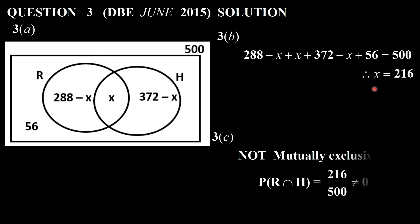Now we can ask a question. They ask you is it mutually exclusive? And obviously you can see it's not mutually exclusive because there's a x and the x value is 216. The probability of getting rugby and hockey is not a zero. Therefore it's not mutually exclusive.